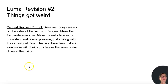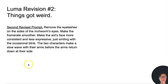Our revised second prompt: remove the eyelashes on the side of the inchworm's eyes, make the frame rate smoother, make the ant's face more consistent and less expressive — just smiling with the occasional blink. The two characters make a slow wave with their arms before the arms return down at their side.